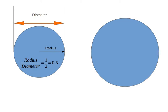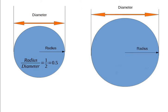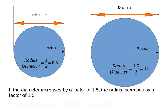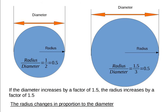Here's a bigger circle — specifically 1.5 times bigger. Here's the radius. Here's the diameter. We know that if the diameter increases by a factor of 1.5, the radius increases by a factor of 1.5. In other words, the radius changes in proportion to the diameter.